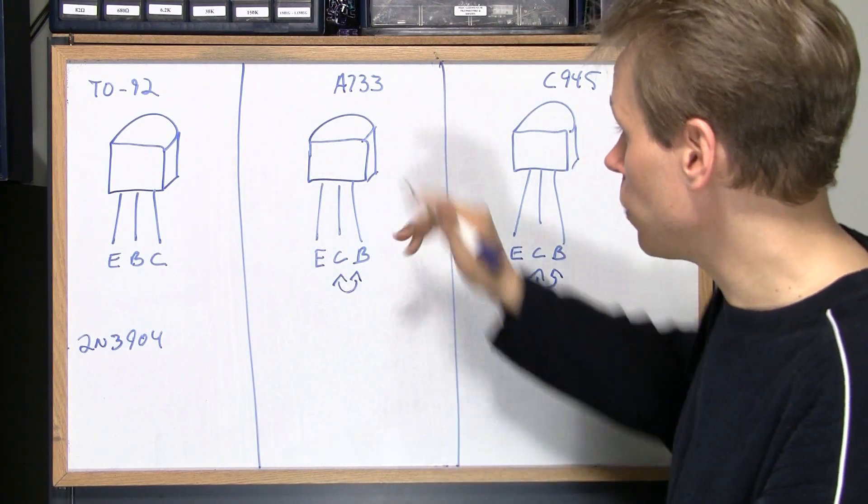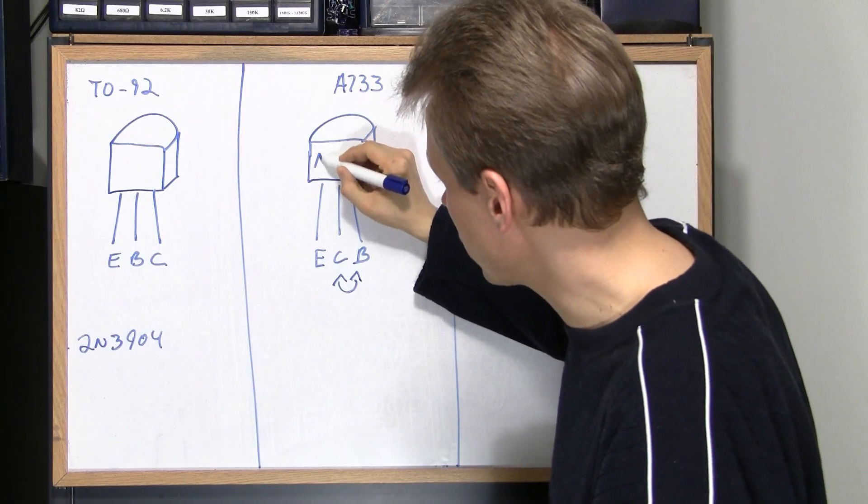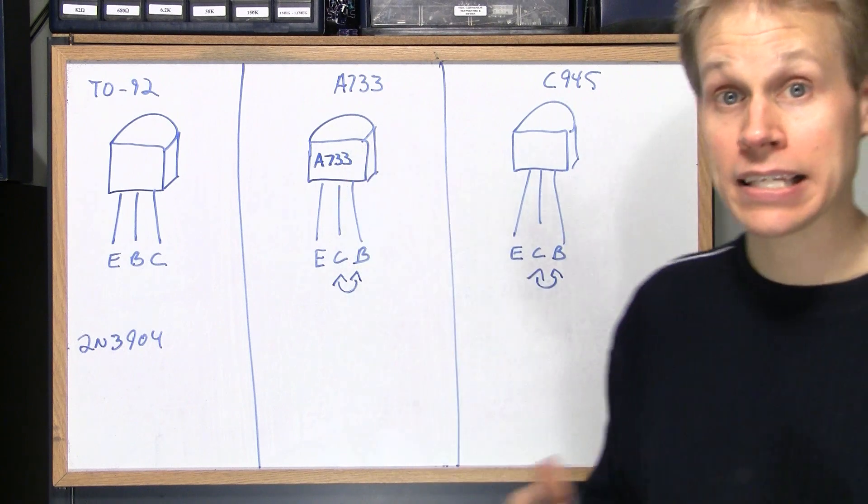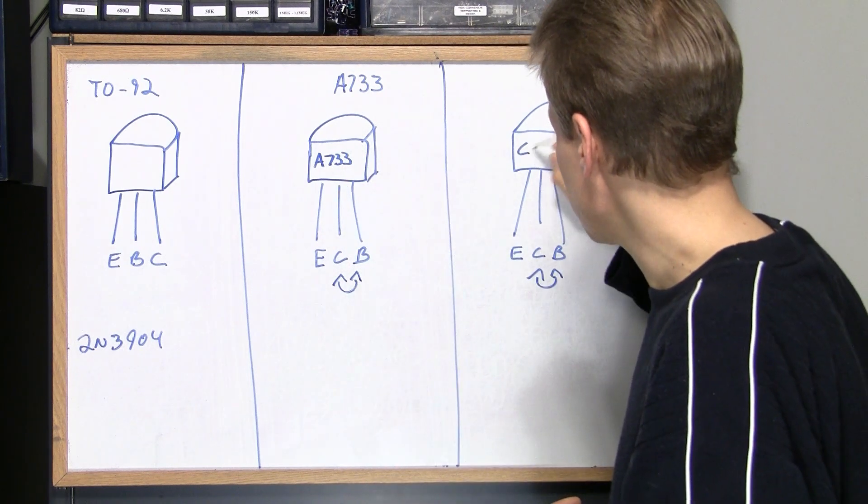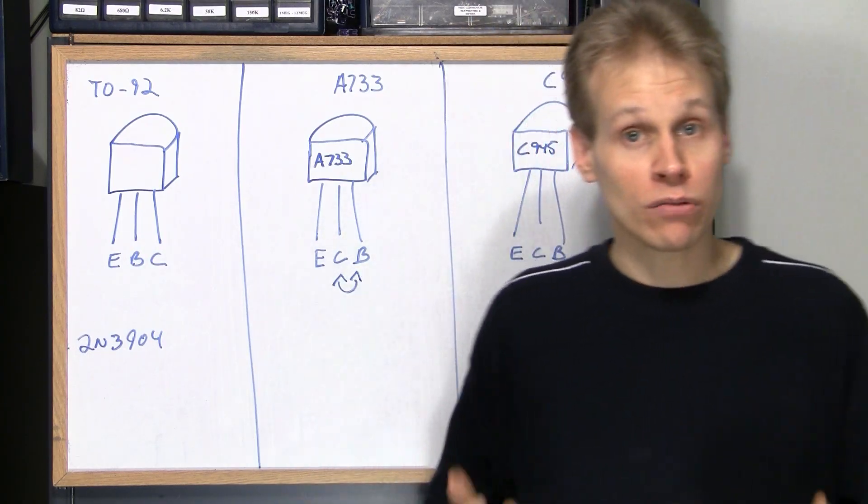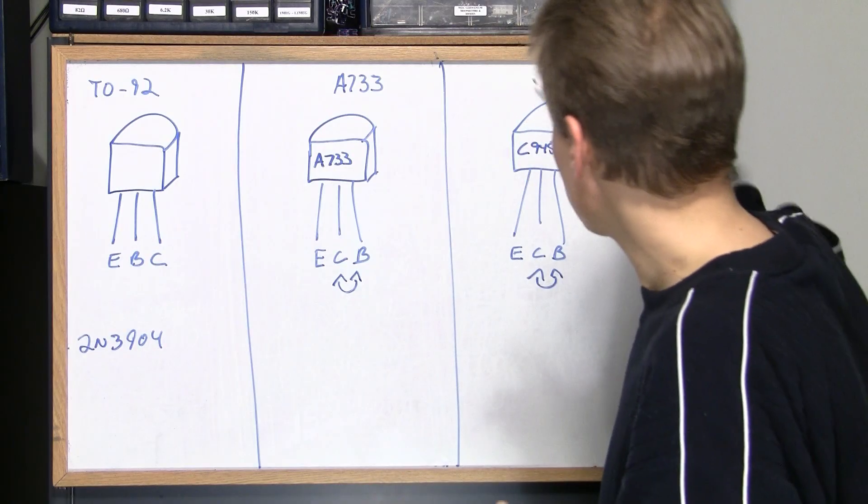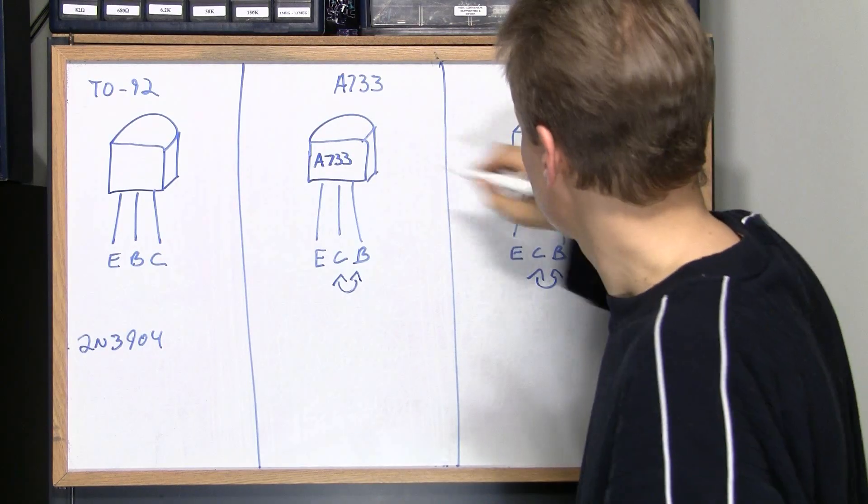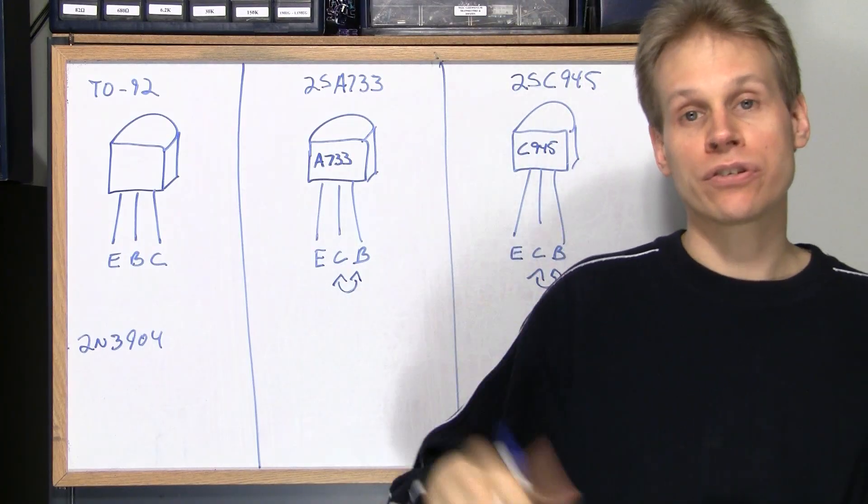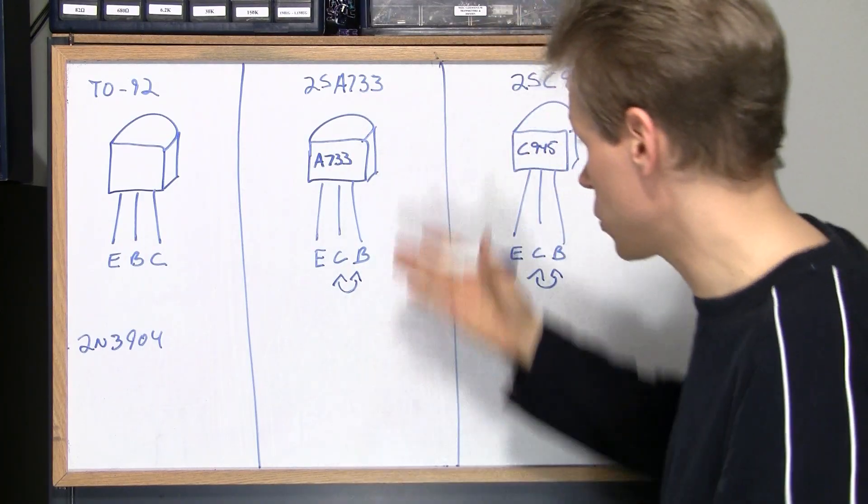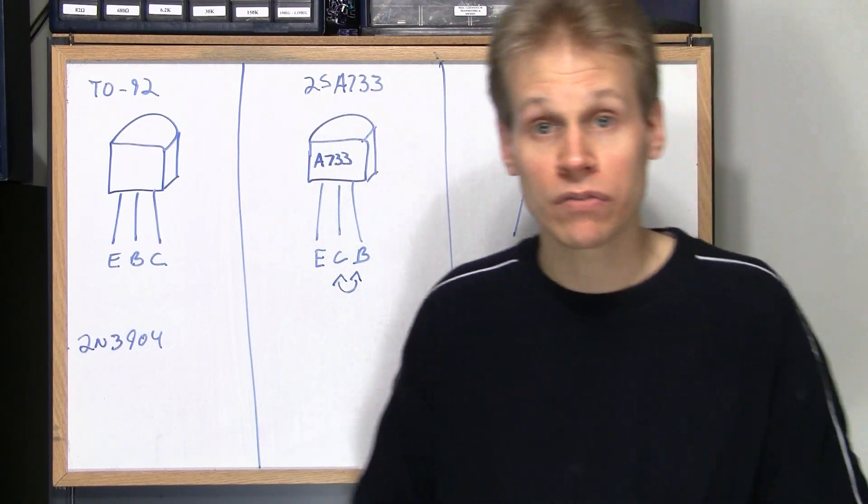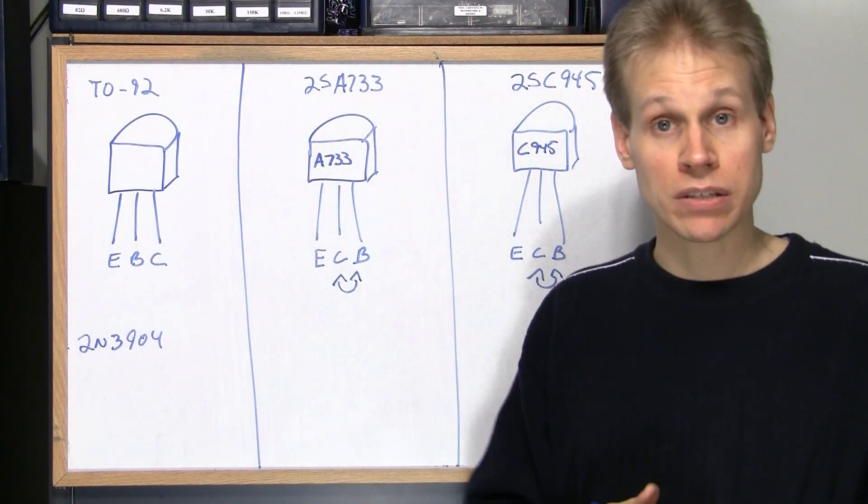So this is the 2S system so whenever you see on a transistor, you'll recognize A733 or C945 or 1815 or anything like that. Well always put a 2S in front of it. And then you can look up your number very easily. A lot of the datasheet searches now will just automatically edit that in because a lot of people just write A733 or C945. This is the proper part number for these pieces, they just don't put 2S on there.